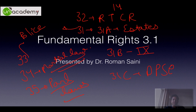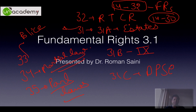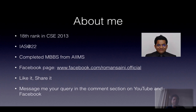Apart from this, Article 14 to 32 are the actual fundamental rights. Articles 14 to 31 are the actual fundamental rights. Article 31 was there earlier but has now been repealed — that was the right to property. Article 32 is related to the right to constitutional remedy. So now that we have that out of the picture, let's start with the lecture.